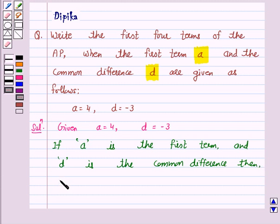then A, A plus D, A plus 2D, A plus 3D and so on is an arithmetic progression.